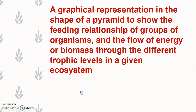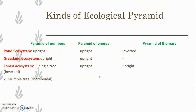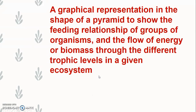In an ecosystem there will be flow of energy — 10% energy will transfer from one trophic level to the next trophic level, and biomass also flows through the different trophic levels. So this is basically a graphical representation showing the relationship of groups of organisms.